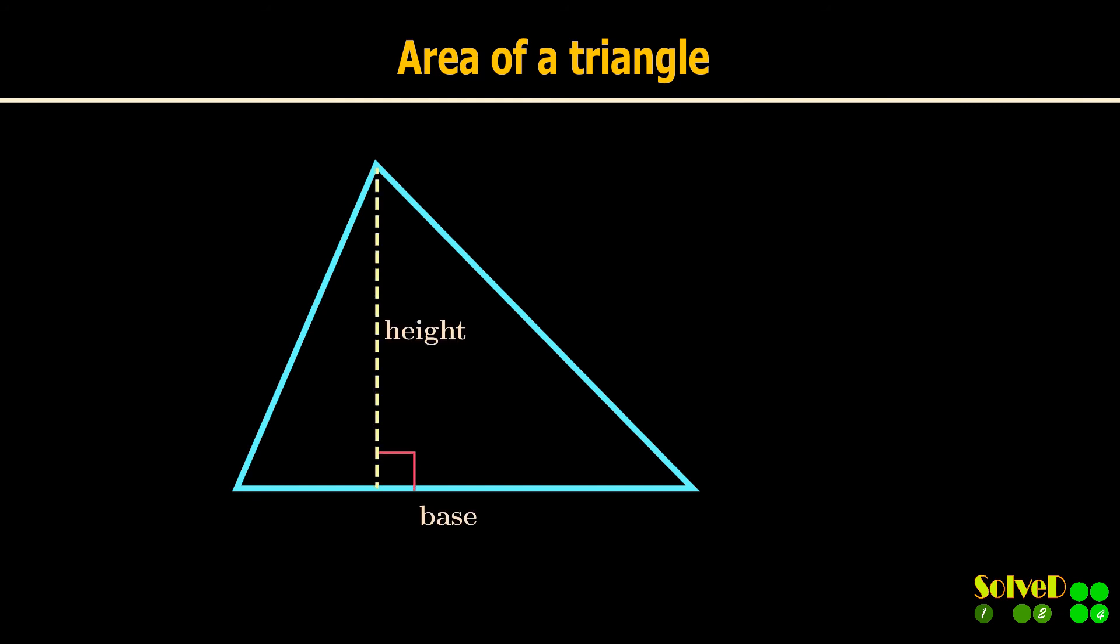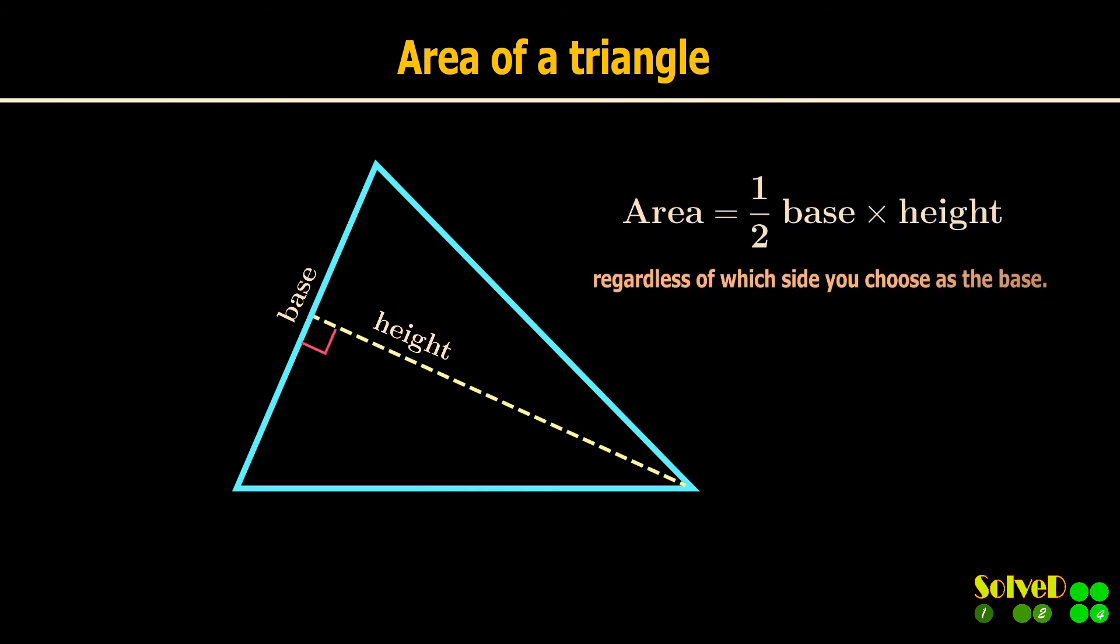The area of a triangle is half the base times height, and it does not depend on the choice of which side is chosen as the base.